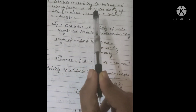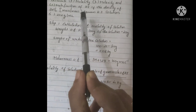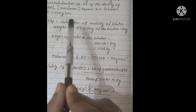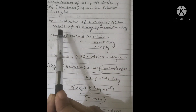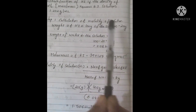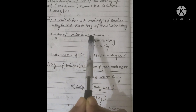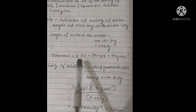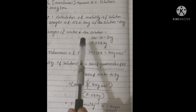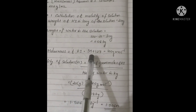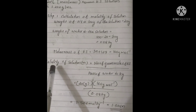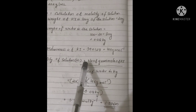The next problem: Calculate molality, molarity, and mole fraction of potassium iodide, if the density of a 20% potassium iodide solution is 1.202 grams per milliliter. Step 1: Calculation of molality. Weight of potassium iodide in 100 grams of solution equals 20 grams. Weight of water equals 100 minus 20, which equals 80 grams, or 0.08 kilograms. Molar mass of potassium iodide equals atomic mass of potassium (39) plus atomic mass of iodine (127), which equals 166 grams per mole.